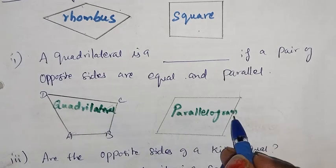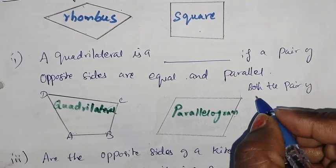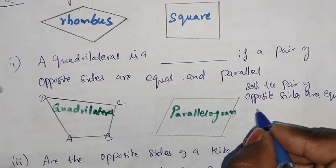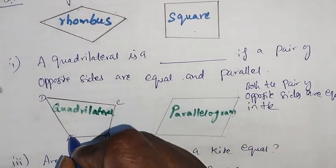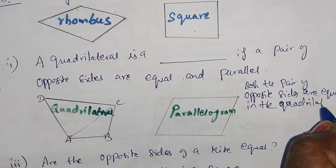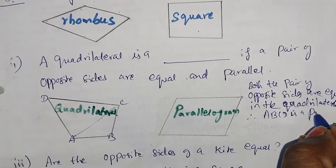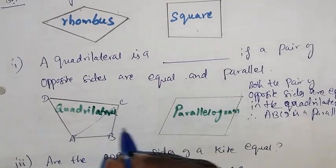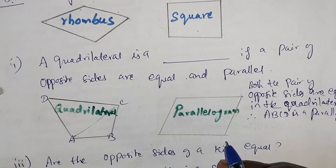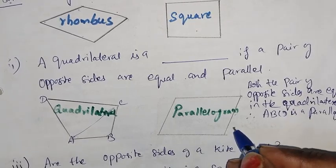Therefore, ABCD is a parallelogram. Both pairs of opposite sides are equal in the quadrilateral, therefore ABCD is a parallelogram. A quadrilateral is a parallelogram if a pair of opposite sides are equal and parallel.